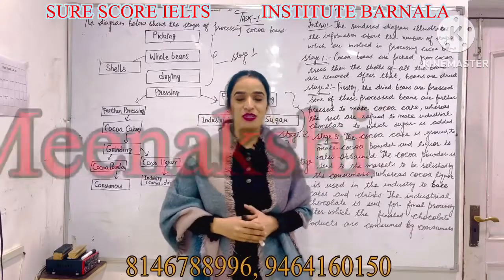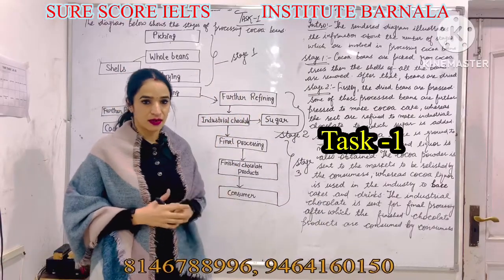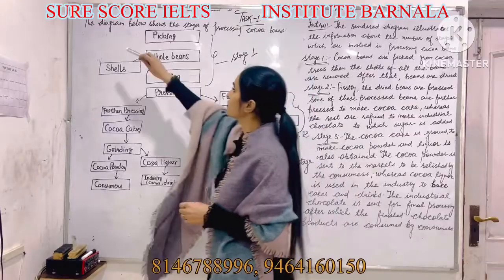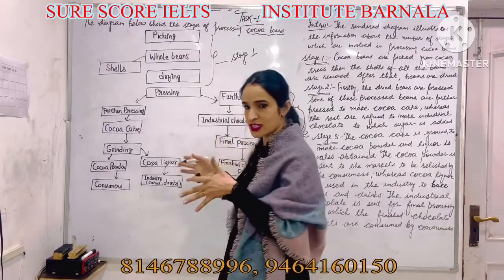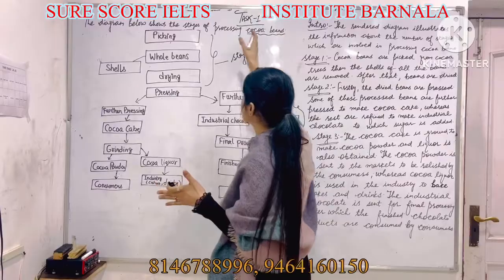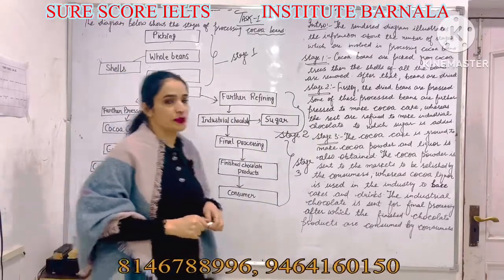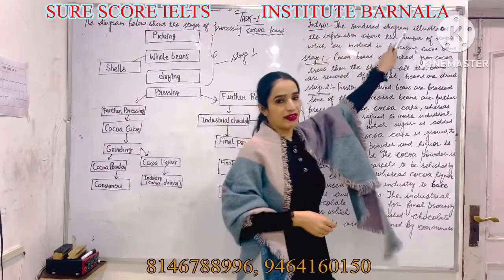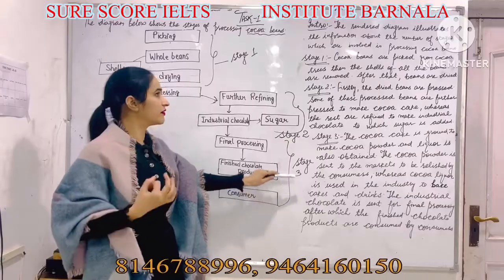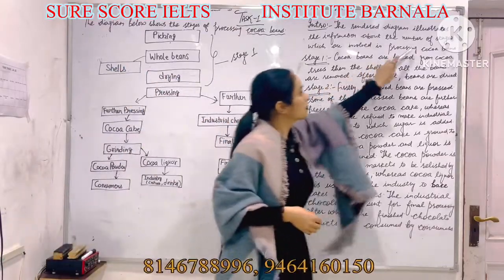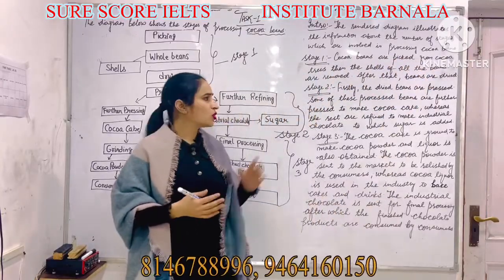Hello friends, this is Dr. Meenakshi. Welcome back to my channel. Today again I'm here with Task 1, that is process. The diagram below shows the stages of processing cocoa beans, so it's all about the process chart in which cocoa beans are being processed. For the introduction part, you have to start with: 'The diagram illustrates information about the number of stages involved in processing cocoa beans.' Three stages are given to you: stage one, two, and three.